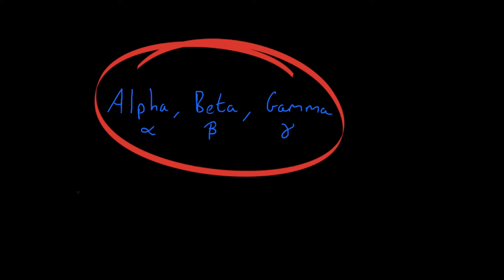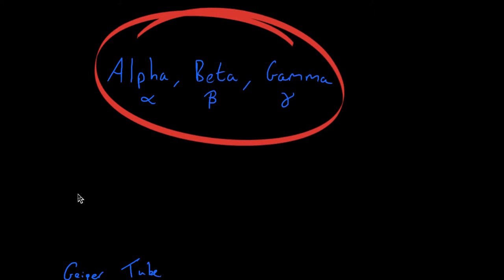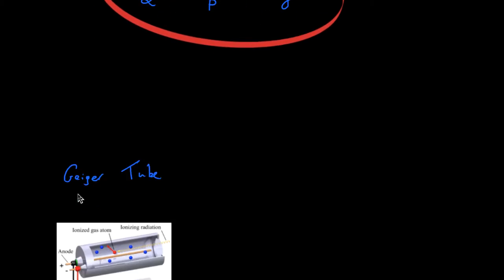In this video we're going to talk about alpha, beta and gamma radiation in slightly more detail. In the last video I introduced them and told you what they were and how ionizing they were. In this video we're going to look in more detail at each one and how we actually measure radiation, using a device known as a Geiger tube.